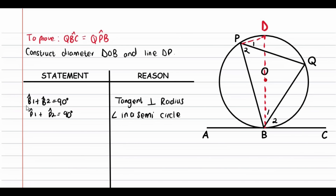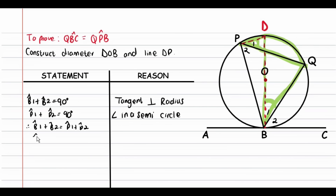Since angle B1 plus angle B2 equals 90 degrees, and angle P1 plus angle P2 also equals 90 degrees, the two sums are equal. Now focus on arc DQ. Arc DQ supports angle B1 at the circumference, and it also supports angle P1 at the circumference. Therefore angle P1 equals angle B1, because angles at the circumference supported by the same arc are equal.